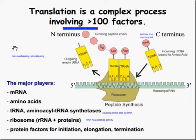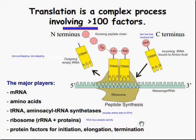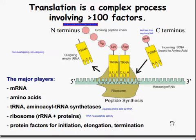The code is non-overlapping and non-skipping. The major players to be concerned with are the mRNA, the amino acids themselves, tRNA, the aminoacyl tRNA synthetase, ribosomes (rRNA plus proteins), and protein factors for initiation, elongation, and termination.